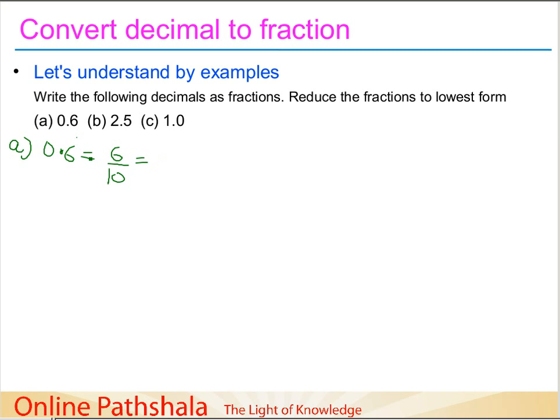You already have learned how to convert this in the previous videos if you have any problem representing this. But the main point is we have to reduce this fraction to the lowest form. So this becomes 6 by 10, which is 2 times 5 equals 10 and 2 times 3 equals 6.